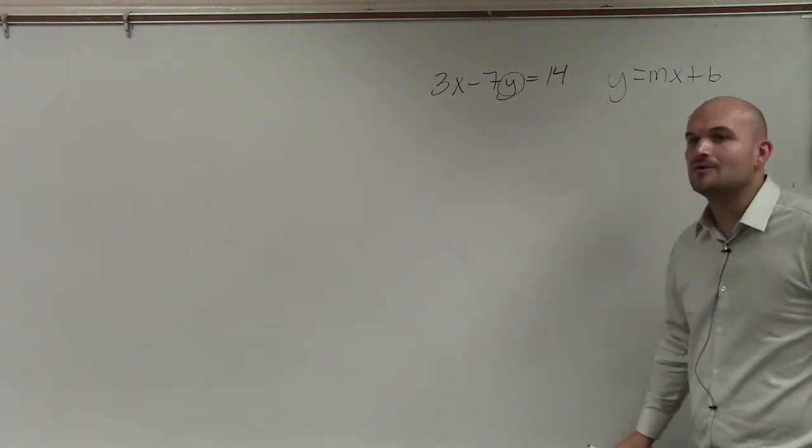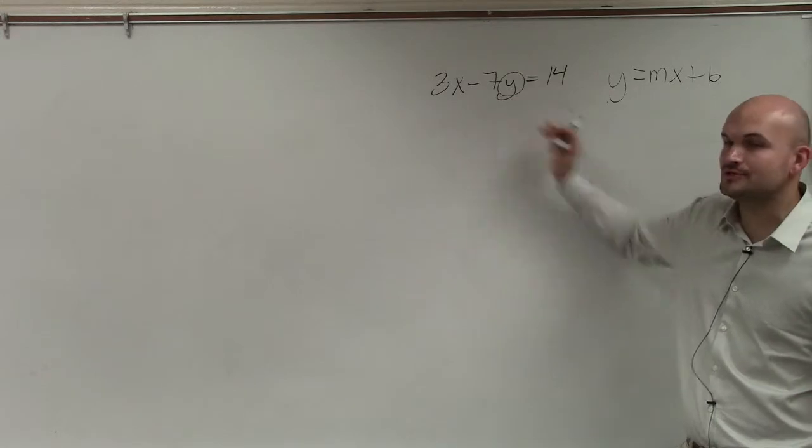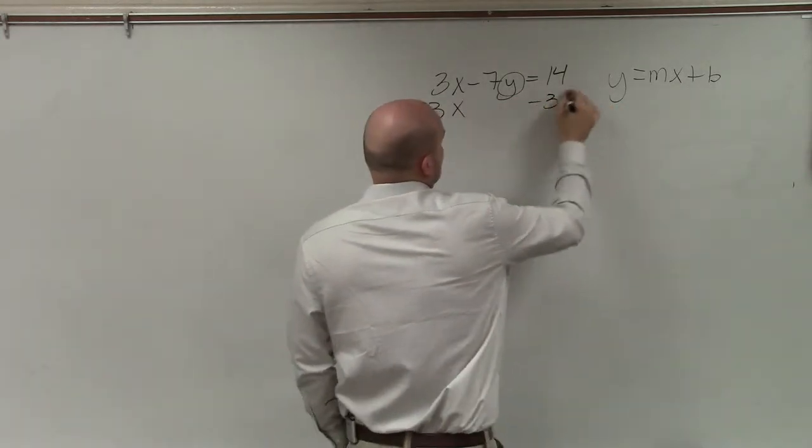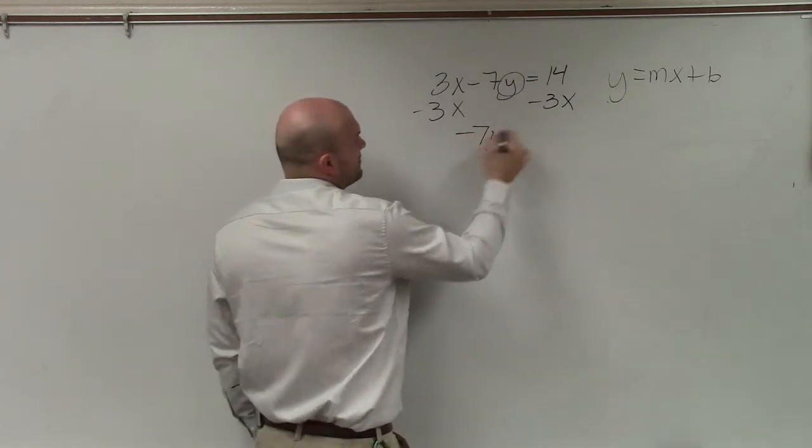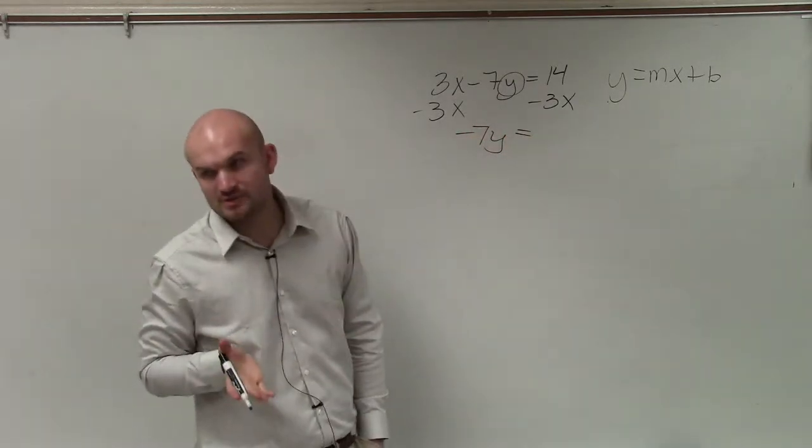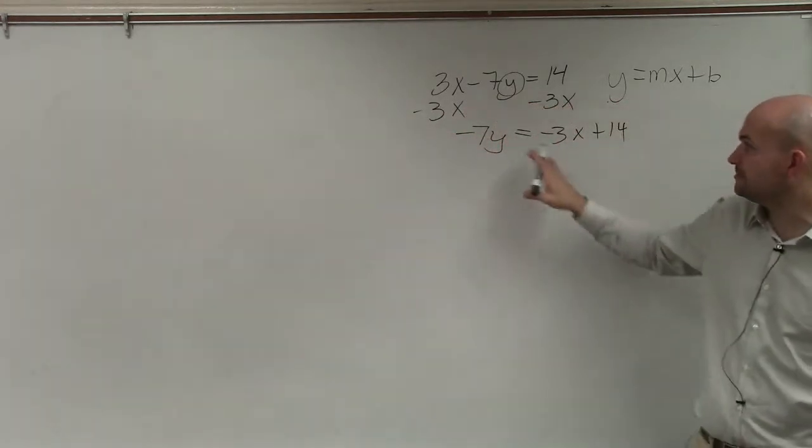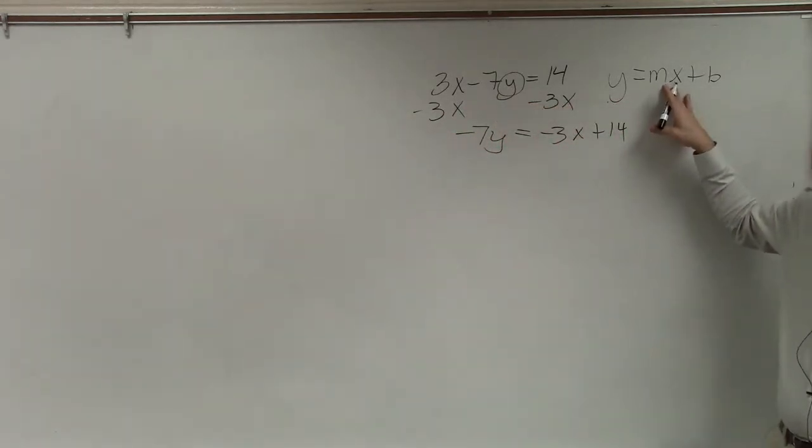So now we're adding 3x. So I'm adding 3x to my negative 7y, so I need to subtract 3x. Therefore, I have negative 7y equals, instead of writing it as 14 minus 3x, we like to write it as negative 3x plus 14. We always want to keep your variable in front.